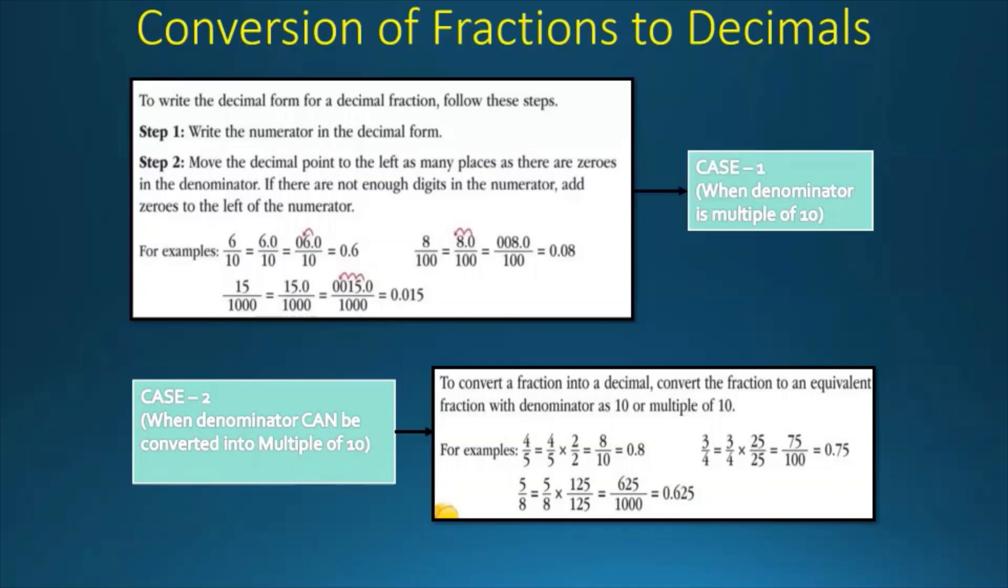Now 5 by 8 we will multiply by 125 to get a multiple of 10, which is 1000. So after multiplying, we will get 625 by 1000, which is 0.625 in decimal form.